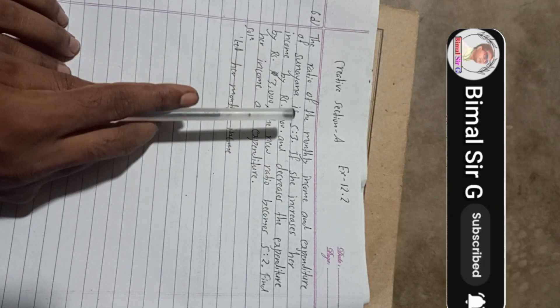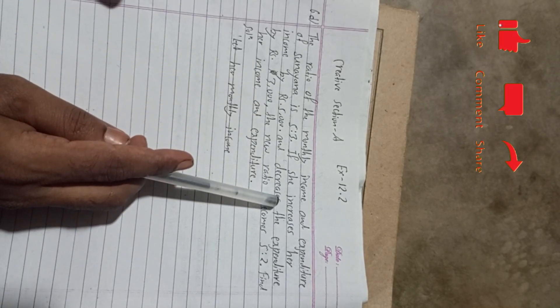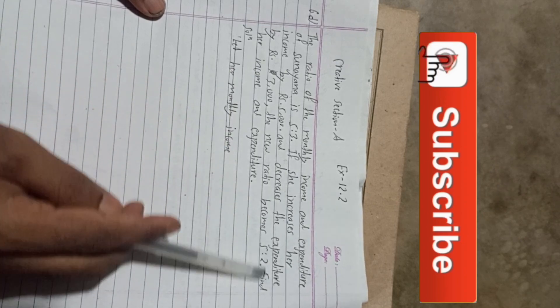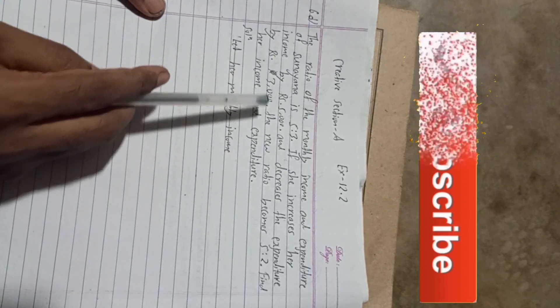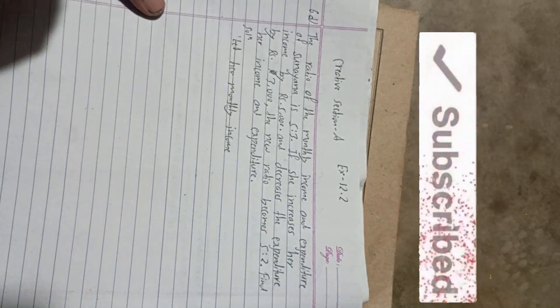The ratio of the monthly income and expenditure of Sunaina is 5 is to 3. If she increases her income by Rs 5,000 and decreases the expenditure by Rs 3,000, the new ratio becomes 5 is to 2. Find her income and expenditure.